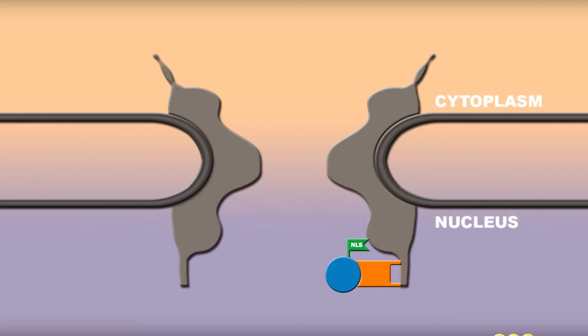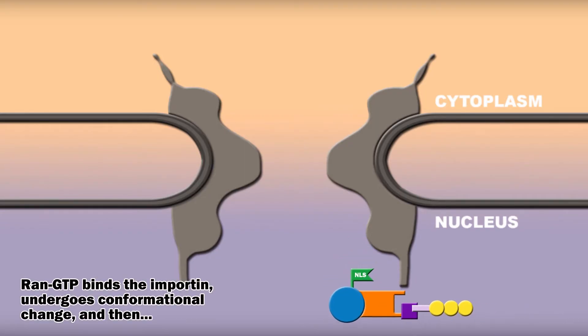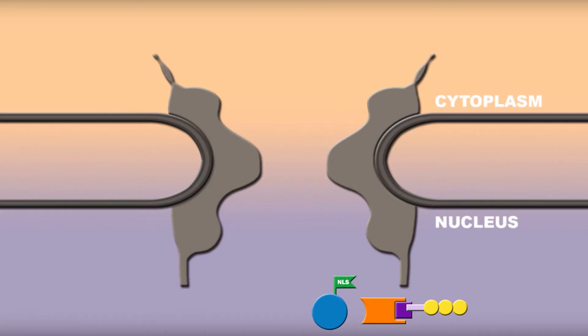The cargo-bearing importin is shuttled across. At the other end of the nuclear pore complex, there is a RAN-GTP. RAN-GTP binds the importin, which has a sort of stacked alpha-helix motif forming a spring-like structure. The spring-like structure has a conformational change, and the cargo protein is released into the nuclear lumen, which is its destination.